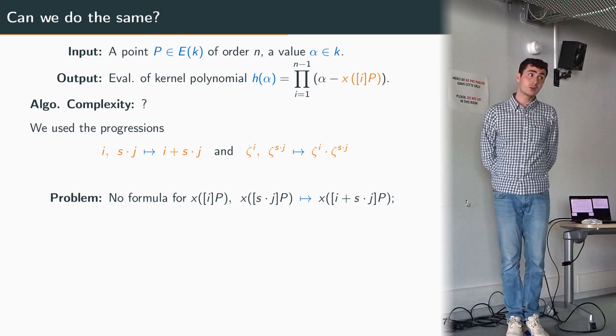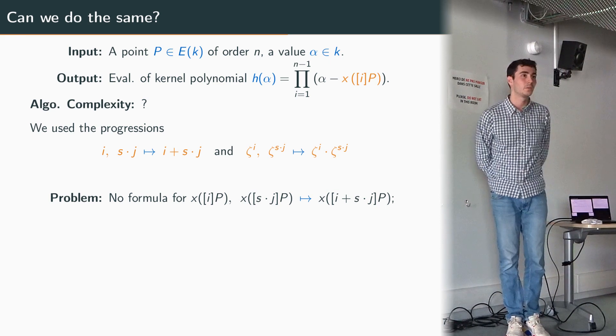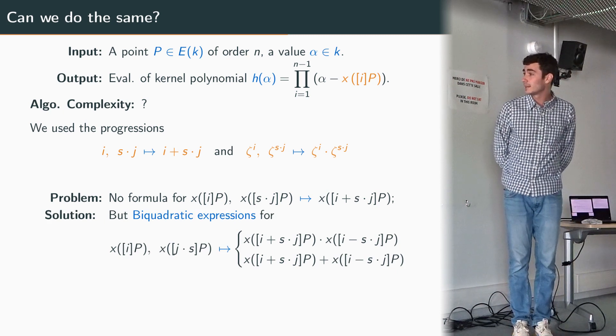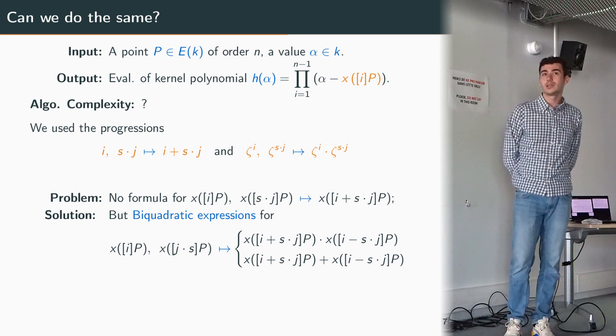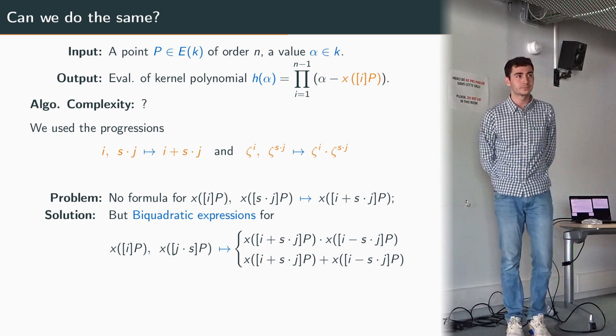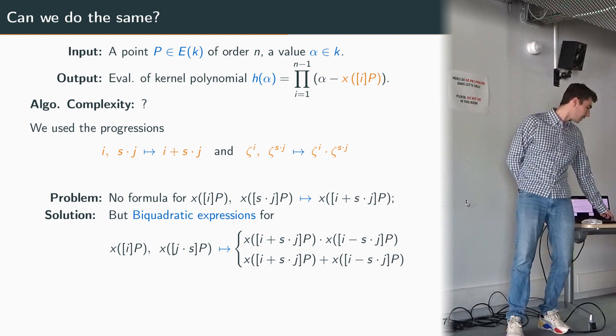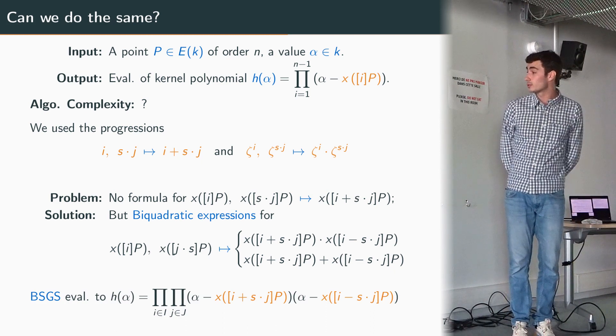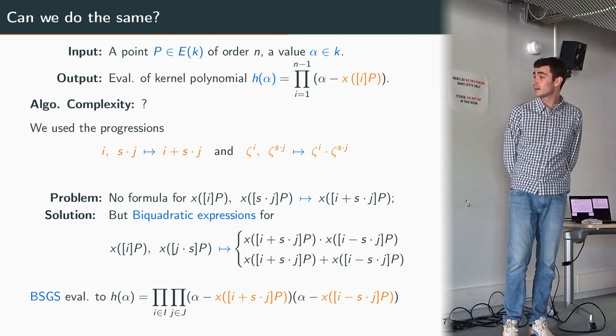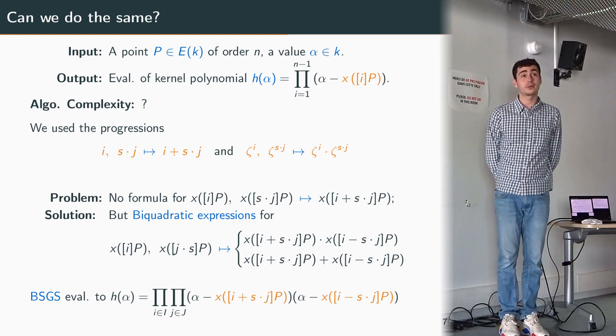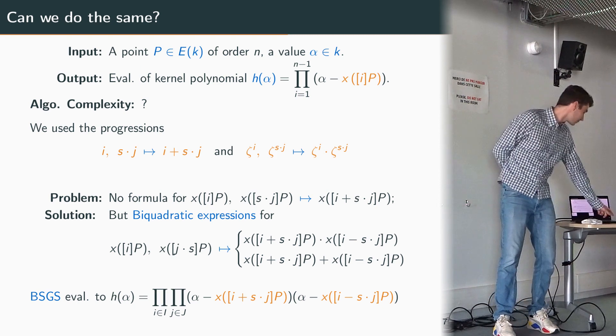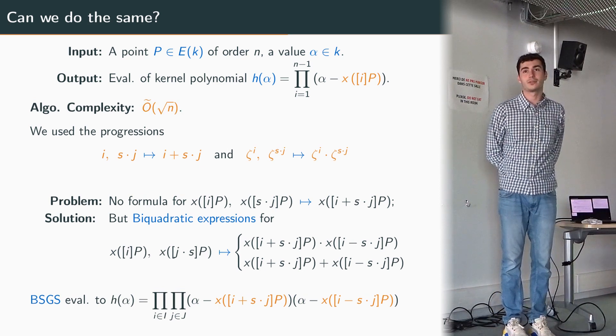This obstacle explains why this algorithm to compute and evaluate isogenies remained the same for so long. The main contribution of our paper is to overcome this obstacle. The idea is to use the next best thing that we have from our algebraic group law on our elliptic curve. In fact we have these interesting biquadratic expressions that allow us to compute the symmetric functions in the x coordinates of (i + sj)P and (i - sj)P. This will actually do the trick for us as we can pair the factors in our polynomials two by two to use these formulas. With that and the correct indices i and j here, we can actually compute our evaluations using the same baby step giant step with resultant idea, and so this gives this Õ of square root of n complexity once again.